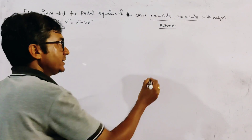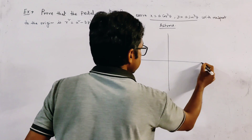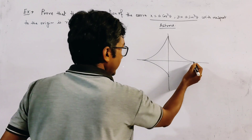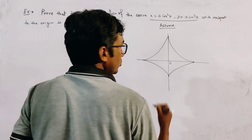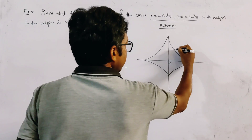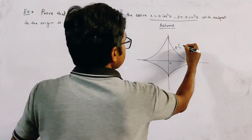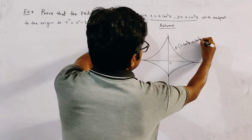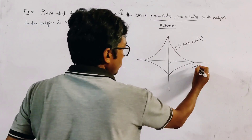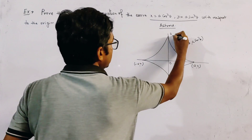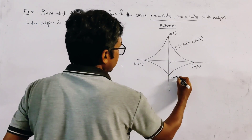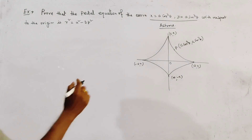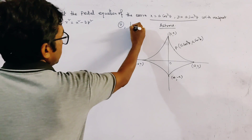Now we know that the rough sketch of the asteroid looks like this. This is the asteroid with origin O. Let any point P on the curve be given by (a·cos³θ, a·sin³θ). The key vertices of the asteroid are at (a, 0), (−a, 0), (0, a), and (0, −a). We have to find two values: R and P.